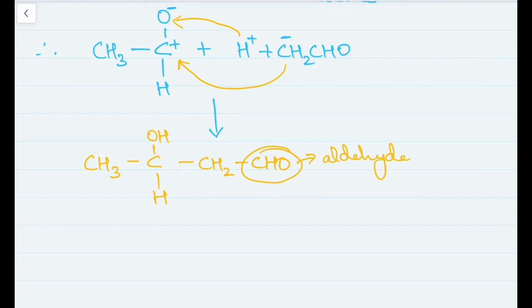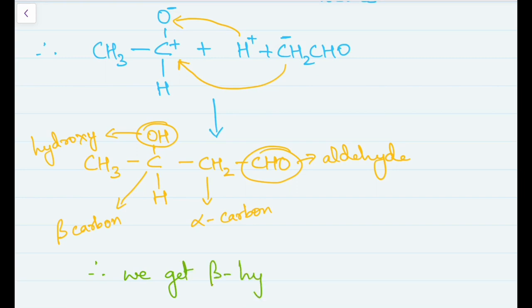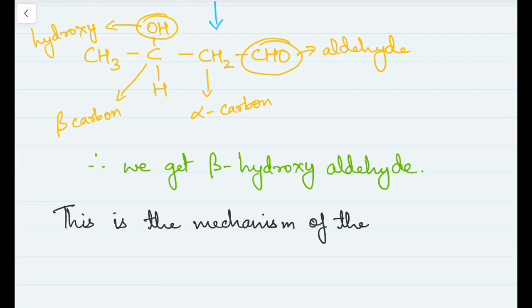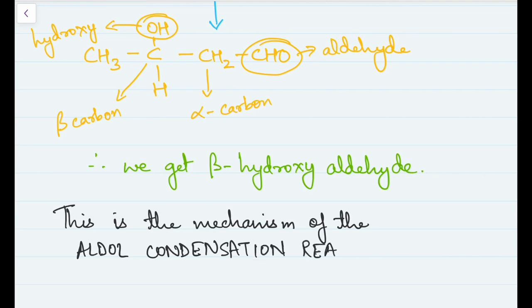The product contains an aldehyde as the functional group. The carbon directly attached to the aldehyde becomes the alpha carbon, and the carbon attached to the alpha carbon becomes the beta carbon. The answer we get is a beta hydroxy aldehyde. Remember: in aldol condensation, the answer will always be either a beta hydroxy aldehyde or a beta hydroxy ketone. If you get anything else, something went wrong.